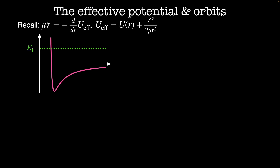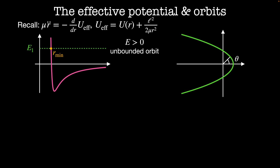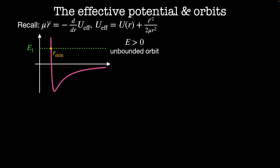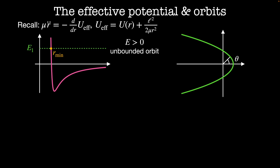Imagine I start with a total energy E1, which is greater than zero. This corresponds to an unbounded orbit, because I only have one turning point in the system — that is, a place where there is all potential and no kinetic energy — and this is at the distance of closest approach. Since there is only one minimum, this orbit is called unbounded. Solutions like this are often called scattering states, and their orbits look like this.